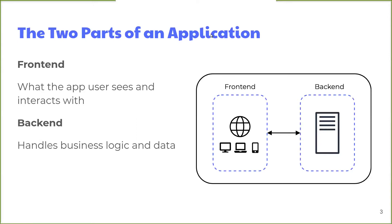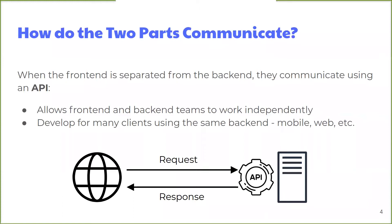Applications can be thought of as having two parts: front-end and back-end. The front-end is what the user sees and interacts with. The back-end handles the business logic and data to support the front-end and all of its functionality. In modern apps, a common practice is to completely separate the front-end from the back-end. Apps that use this kind of architecture require some way for the front-end and the back-end to communicate. This communication is done through something called an API. The back-end produces the API and the front-end consumes it. This kind of architecture allows front-end and back-end teams to work independently and facilitates development of different front-end client apps using the same back-end.